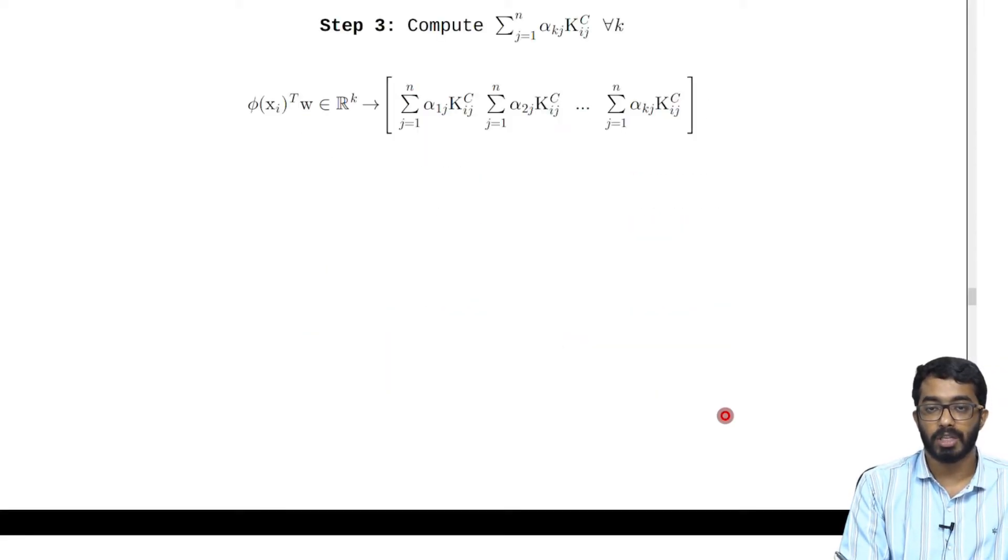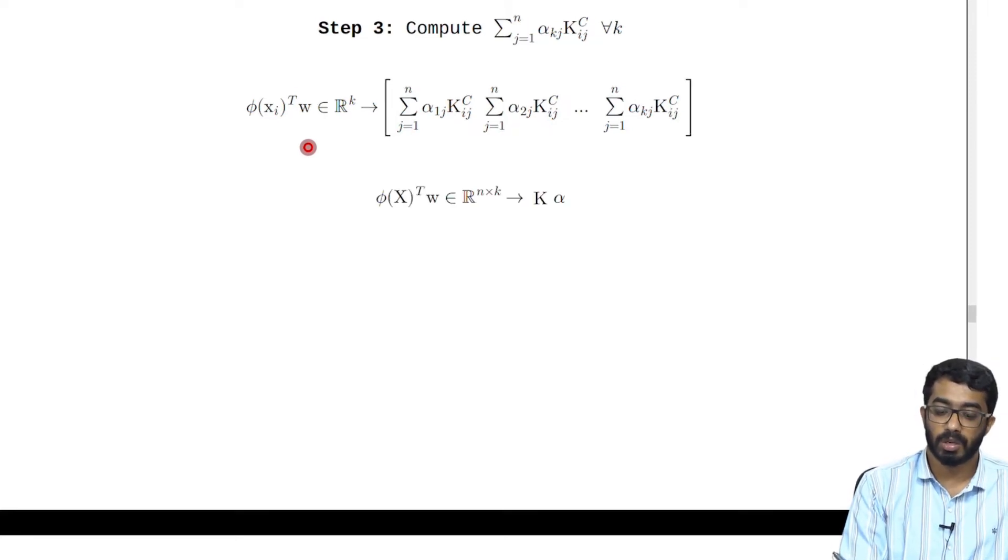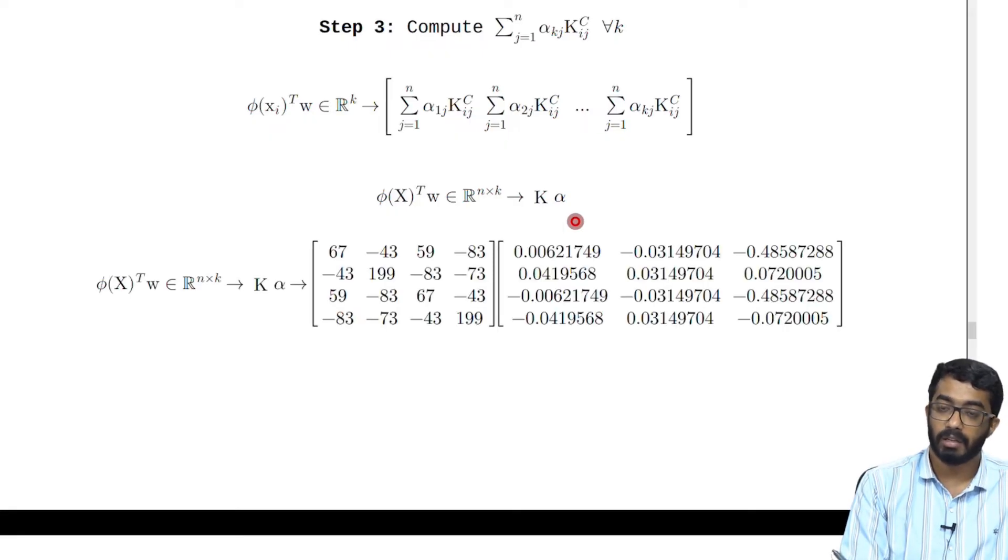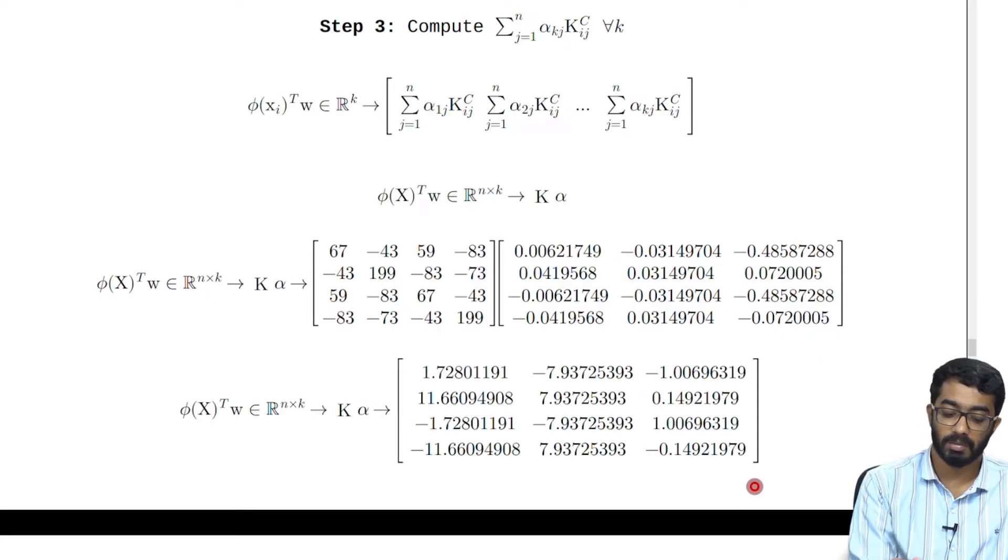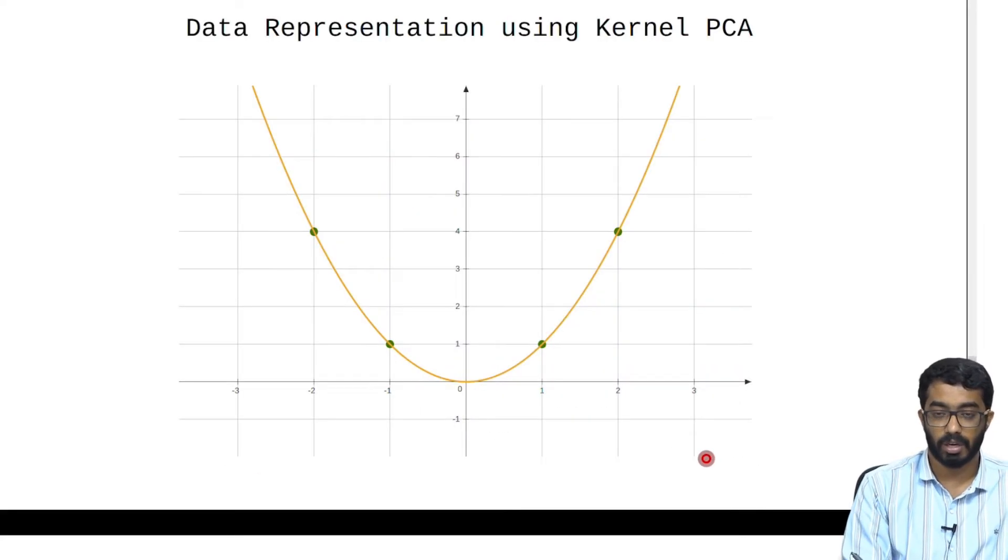Now let us compute the representation matrix of the original data set. The representation is given by X transpose W but this X transpose W can also be written as K alpha. Plugging in the values of K and alpha here we get the representation matrix like this. The visual representation of the representation matrix is given by this plot. So as you can see the data set is of a quadratic function.